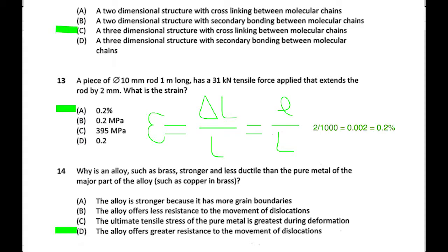Question 14: alloys don't create more grain boundaries - what they do is make it harder to move dislocations. Grain boundaries also impede dislocation movement. When we cold work metal we create more grain boundaries. Two things make it hard to move dislocations: grain boundaries and alloying atoms in the lattice. Alloy metals offer greater resistance to dislocation movement, so the answer is D.